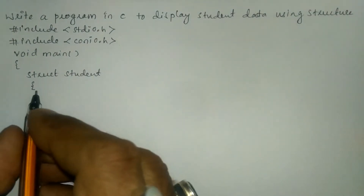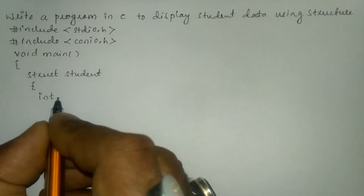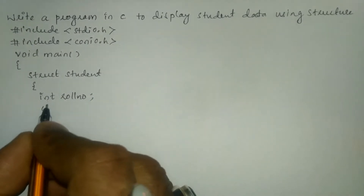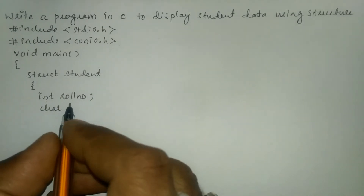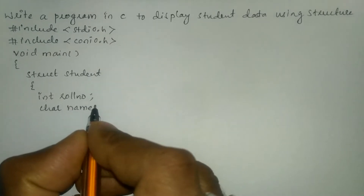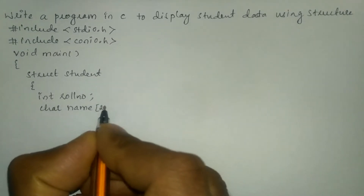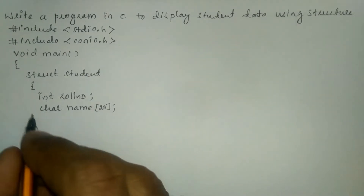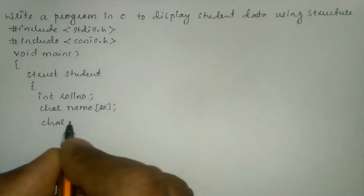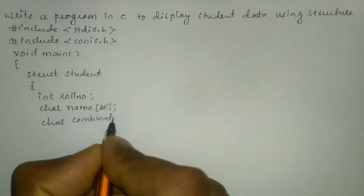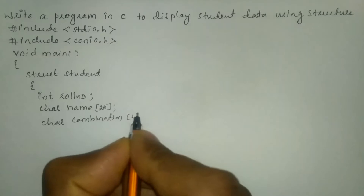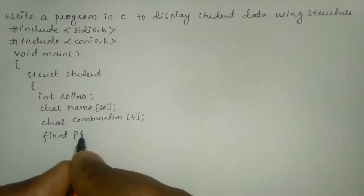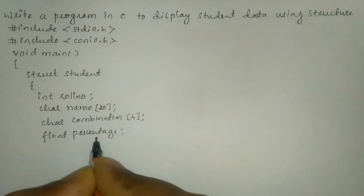Now I'm going to declare a variable called roll number of type integer and put semicolon. Then I'll write character type of data and here I'm going to receive the name of the student, giving the size as 20, so it is an array of characters. Next I'll write char combination with size 4 and put semicolon, and here I'm going to take float percentage and put semicolon.